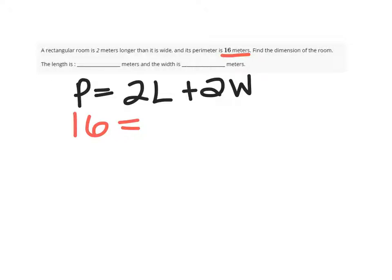And what do we know about the length? We know that it's 2 meters longer than it is wide. So if the width is W, then the length is W plus 2.